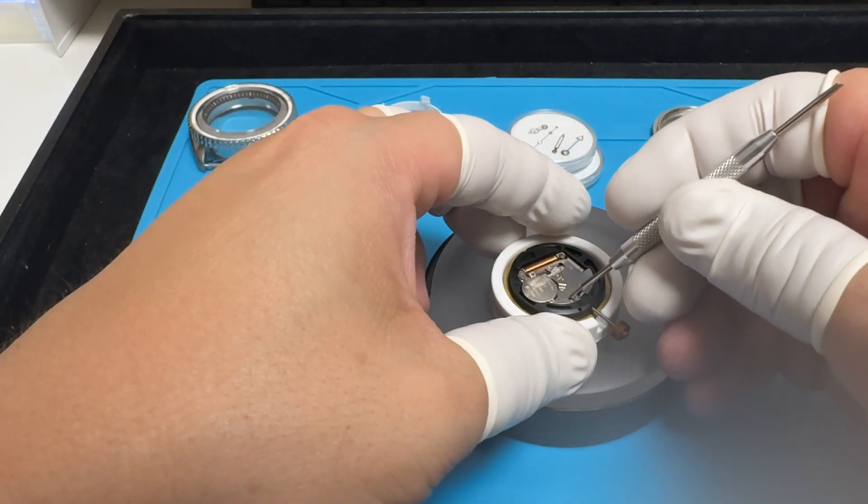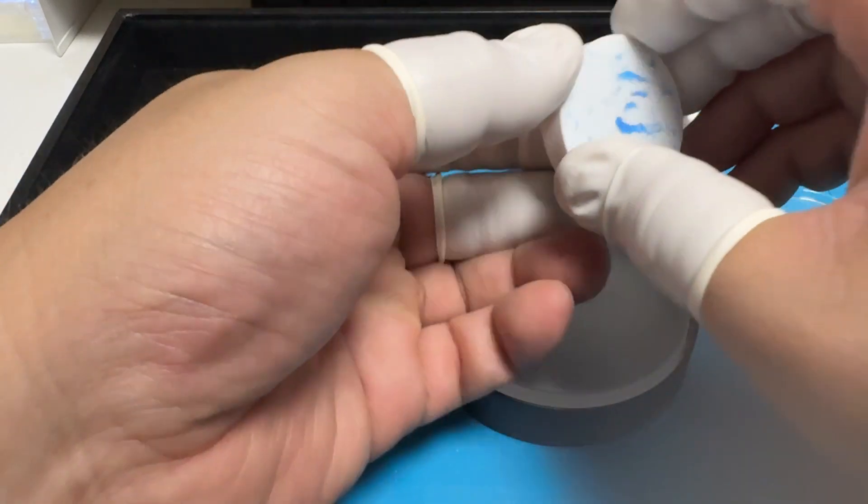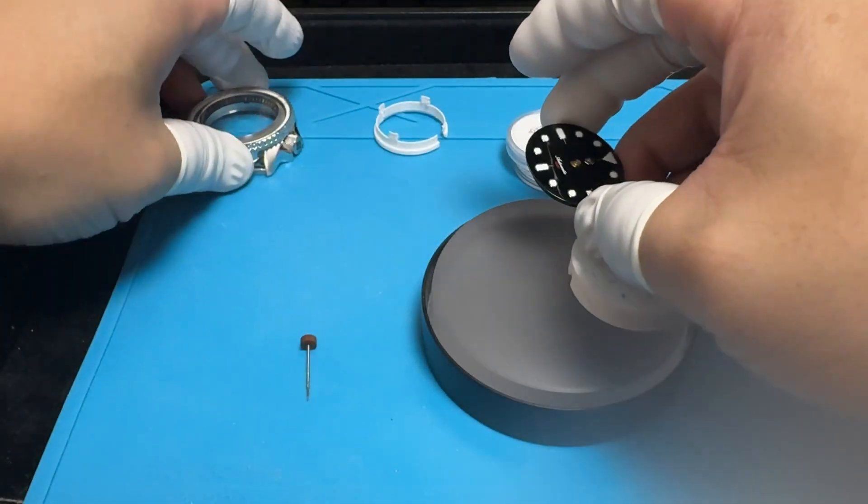To remove the stem from the movement, you pull out one notch and then use a sharp object to poke in that little hole and it should release the stem. And here it is.